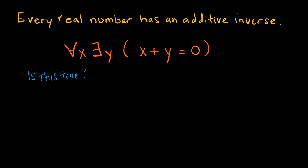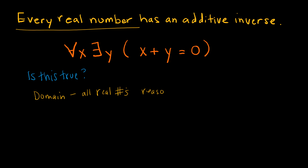We can see here that we have a domain of all real numbers — every real number. So in this domain, because it's all real numbers, in order to show that this is true, we would have to use reasoning and proof because we can't go through an exhaustive list — the real numbers are infinite. However, let's say x was the set of numbers 0, 1, and 2.